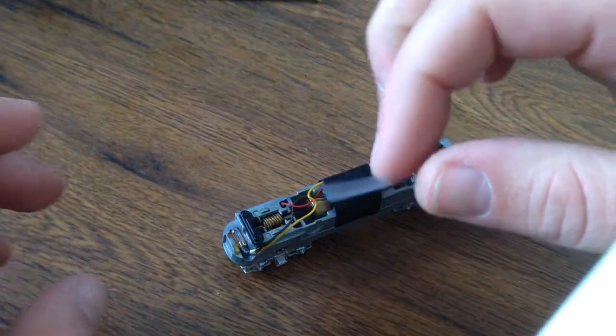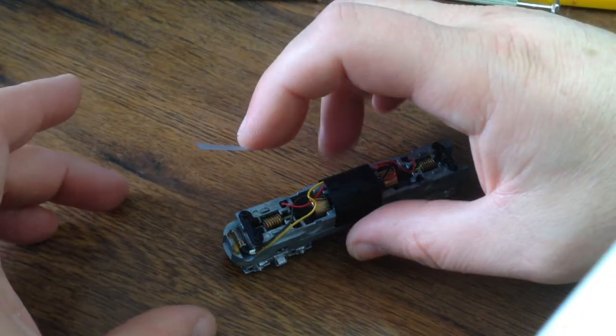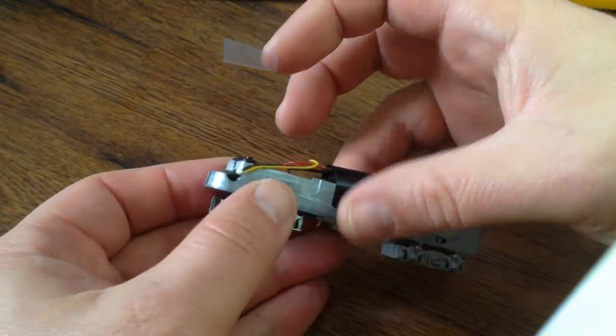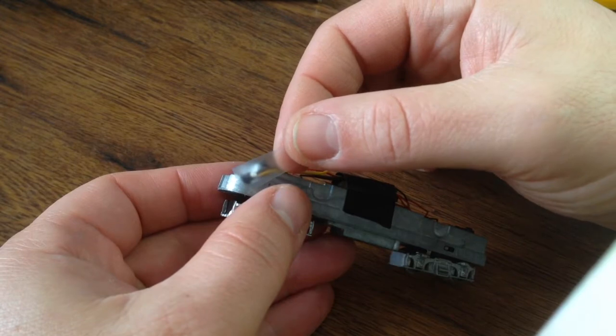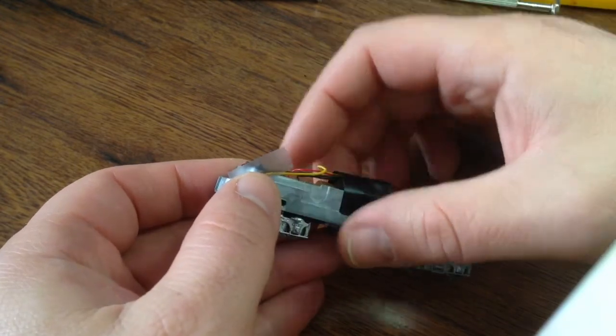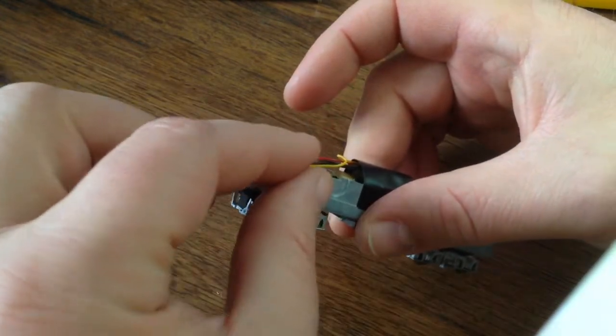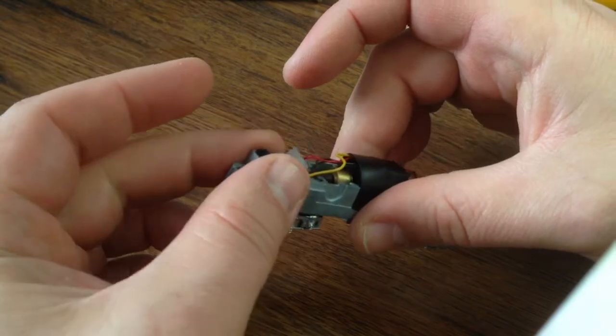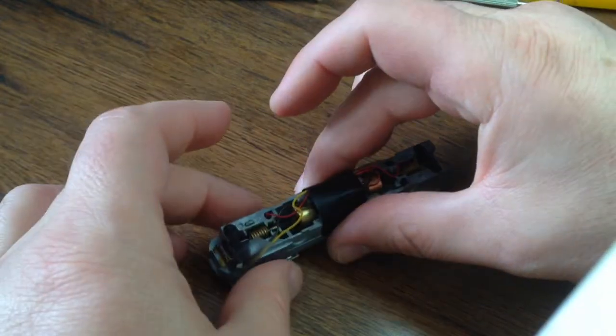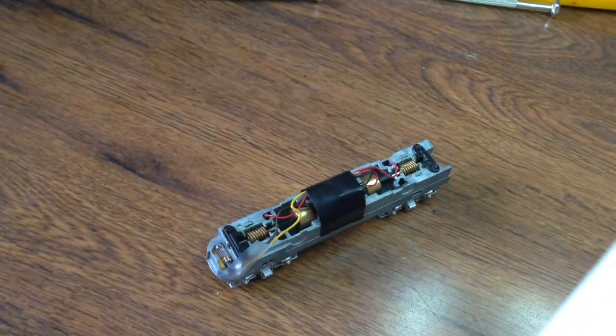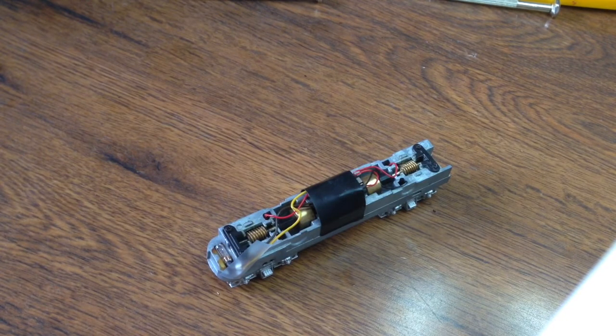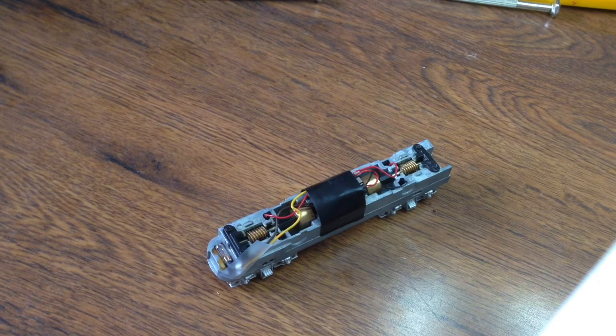So I'm going to put my tape to keep it from short circuiting. You don't need much, just enough to prevent it from touching the body and that's it. Now I'm going to put the body back on. And we're going to see what it looks like on the track.